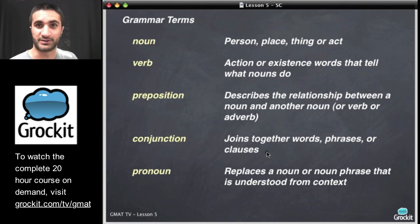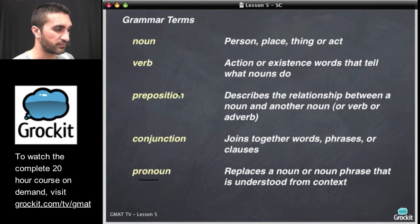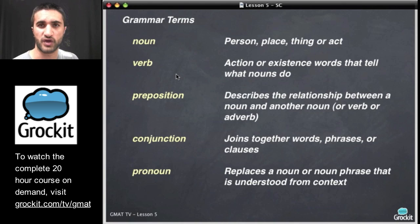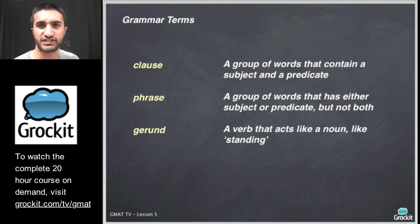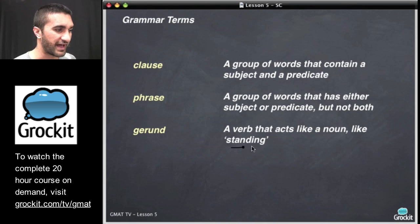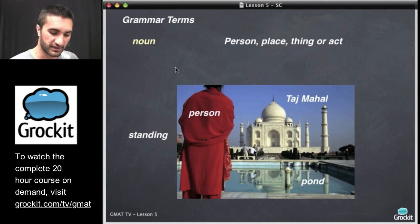Conjunctions join words, phrases, or clauses. Pronouns and their antecedents are a very popular issue on GMAT questions, as are verb and noun agreement — we're going to jump into a bit of that today. We also have clauses, phrases, and gerunds, which are verbs that act like nouns. We'll see some examples of these shortly.